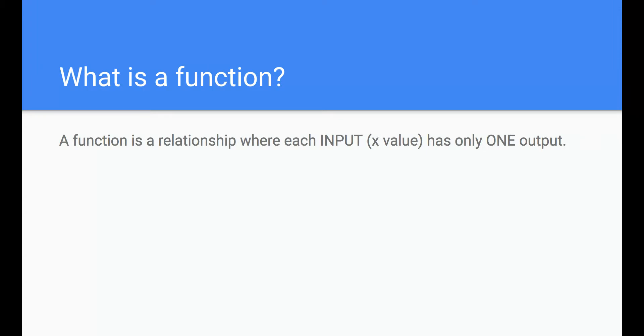I figured I'd start with the definition. A function is a relationship where each input, the x value, has only one output, which is our y value.